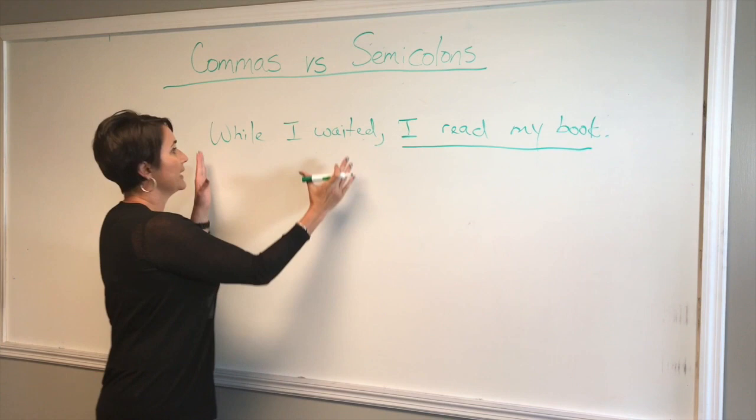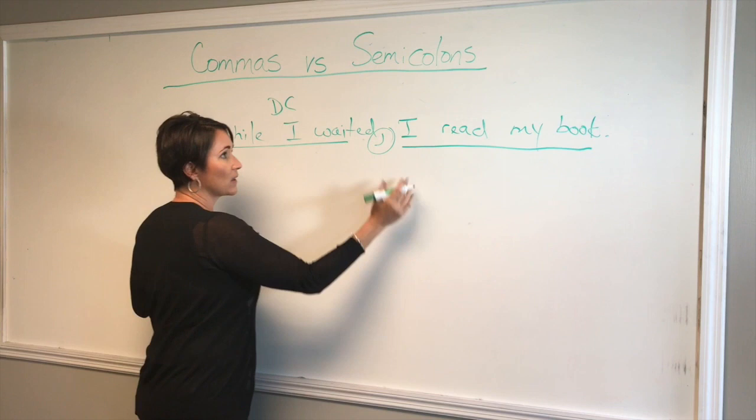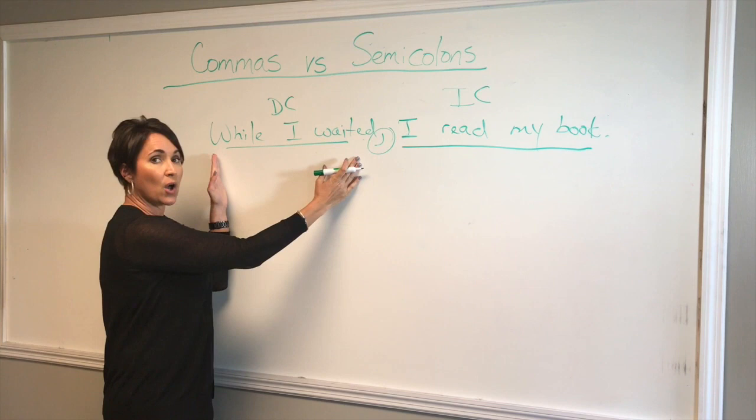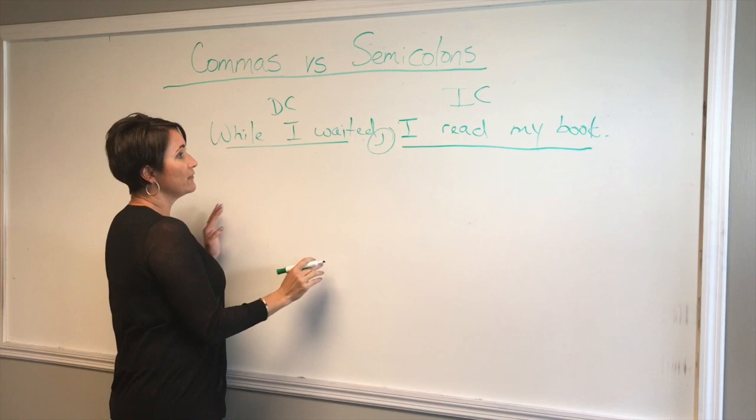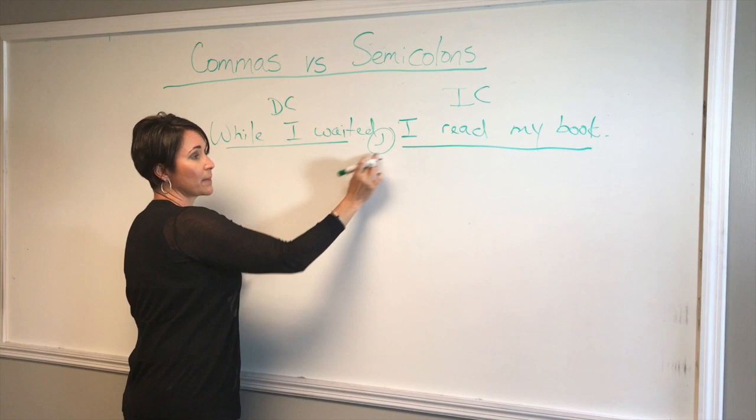While I waited is not a sentence — that's why we call it a dependent clause — and it should be bracketed off by a comma because the independent clause is 'I read my book.' So whenever you have a dependent clause, or sometimes we call these an intro clause, you want to make sure that it's bracketed by a comma. Remember, if you cover up one side of the comma, there should be a full sentence, and if you cover up the other side, it will be a non-sentence. So a dependent clause and an independent clause are separated by a comma.